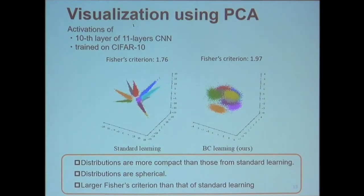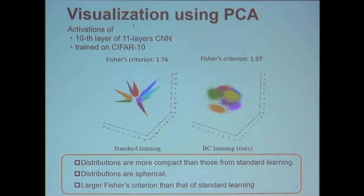This is a visualization of the activations of the tenth layer of an eleven-layer convolutional neural network trained on CIFAR-10. The left figure is from standard learning, and the right is from between-class learning. We show the Fisher criterion score here. We can observe that the distributions from between-class learning are more compact than those from standard learning, confirming that between-class learning generates a more discriminative feature space.